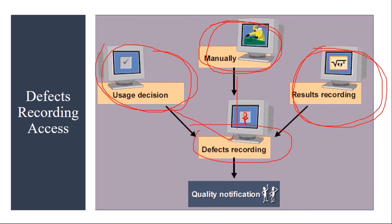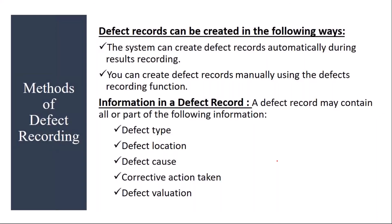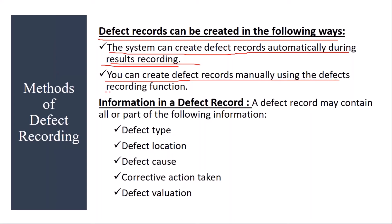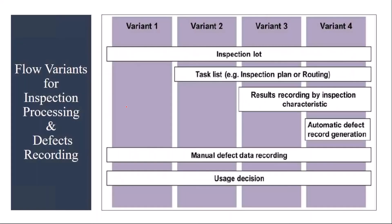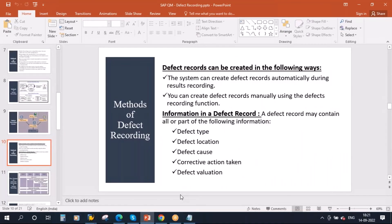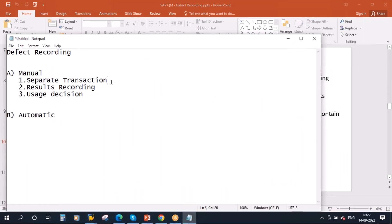Once you do the defect recording, you can trigger a quality notification — this we already covered during our quality notification session, but I will show you again today. The system can create defect records automatically during results recording — that is the automatic method. And you can create defect records manually using the defect recording function. Let me first show you the manual one using separate transactions.